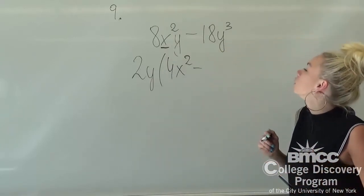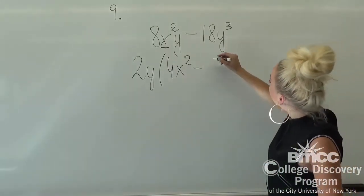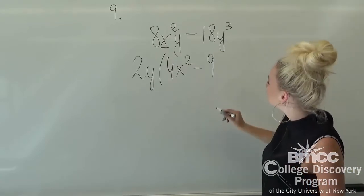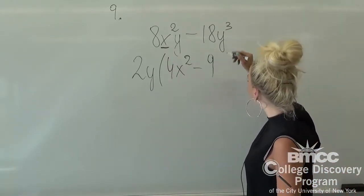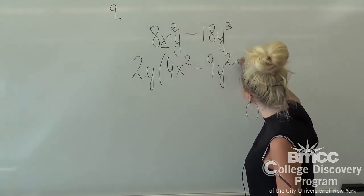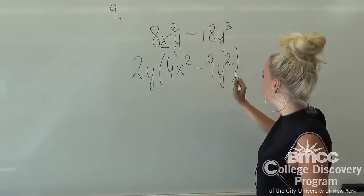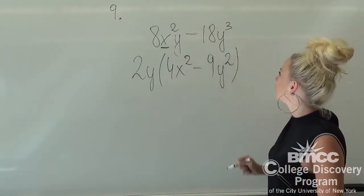From the second term, we're going to have 9, because 2 times 9 is 18, and we're going to have y² left, because y times y² is y³.